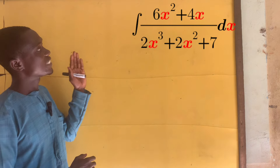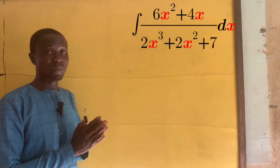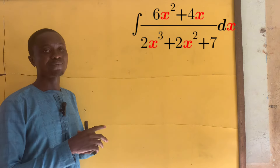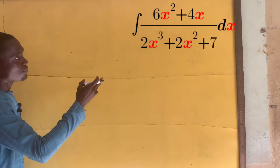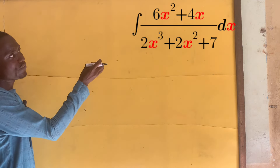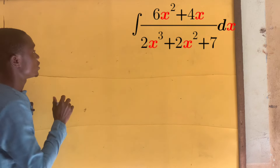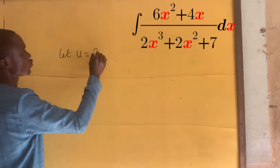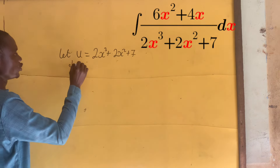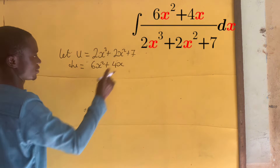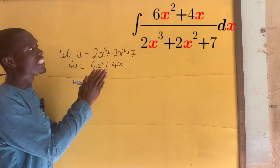In this lesson we'll be integrating 6x squared plus 4x divided by 2x cubed plus 2x squared plus 7 dx — this is an indefinite integral because we don't have the limits. Now let's see how we do it in a very simple way. Are we going to use partial fraction decomposition? No — let us differentiate the denominator, the one with the highest power of x, and see if we can get the numerator. So if we let u equal 2x cubed plus 2x squared plus 7, then du equals 6x squared plus 4x dx.